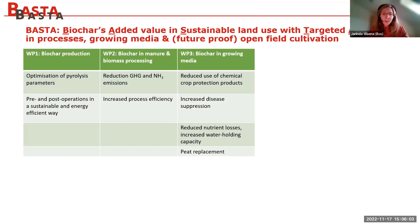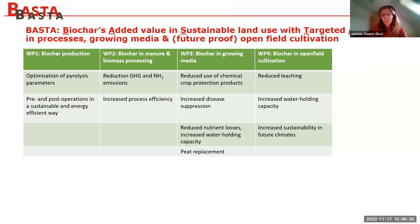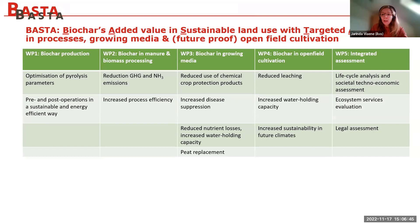In the third work package, ILVO is looking into biochar use in growing media. This has a lot of advantages: it can reduce the use of chemical crop protection products, it increases disease suppression in plants, reduces nutrient losses, and increases water holding capacity. Biochar can also be used as a peat replacer. In the fourth work package, we are scaling up and looking into biochar use in open field cultivation.